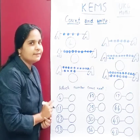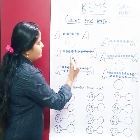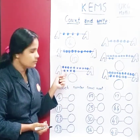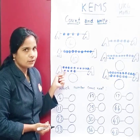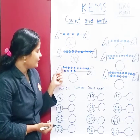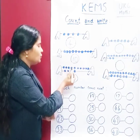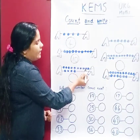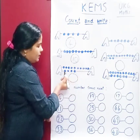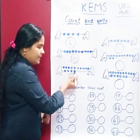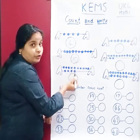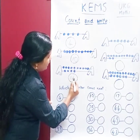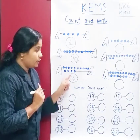How many beats are there? 1, 2, 3, 4, 5, 6, 7, 8, 9, 10, 11, 12, 13, 14. So 14 beats are there. Write number 14. 14 beats are there.